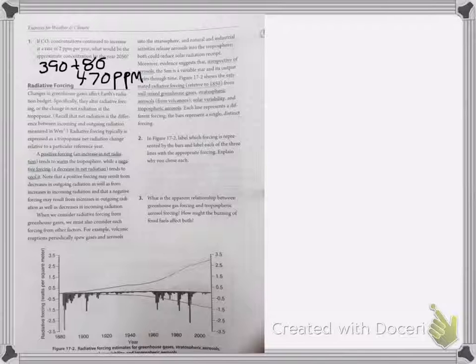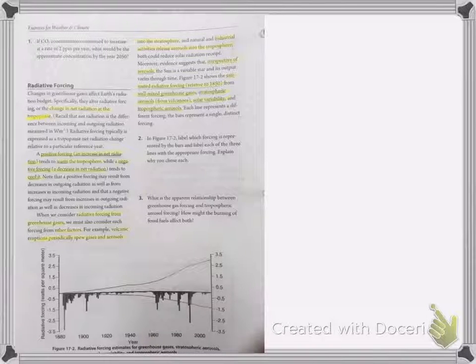Which brings me into the next section. I did some highlighting because now we're going to talk about radiative forcing. We just talked about changes to net radiation in the troposphere. Positive forcing means that I can see a net radiation change that will warm the troposphere, and negative forcing means that I will cool the troposphere. Radiative forcing from greenhouse gases can be considered, but then other things need to be considered too, like volcanic eruptions because that adds aerosols.